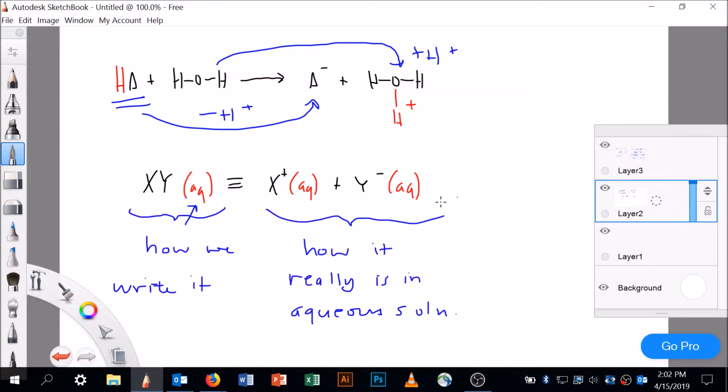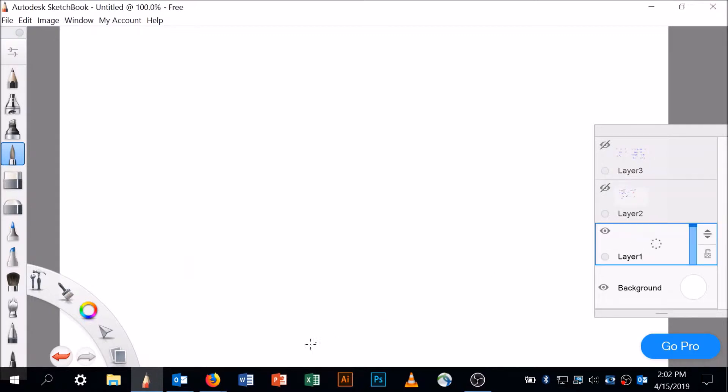So this is how we write it - we write it XY aqueous, but how it really is is X+ and Y-. So when we're doing these problems, let me get rid of this and we'll have a nice whiteboard set up for us to do this problem.